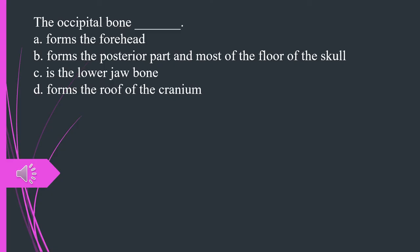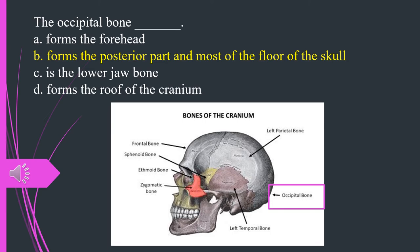The occipital bone, A. Forms the forehead. B. Forms the posterior part and most of the floor of the skull. C. Is the lower jaw bone. D. Forms the roof of the cranium. The answer is B. Forms the posterior part and most of the floor of the skull.